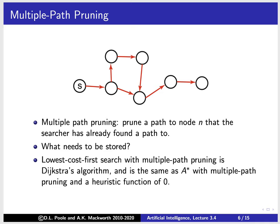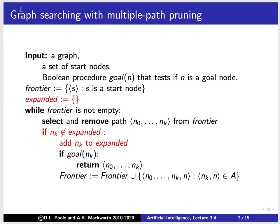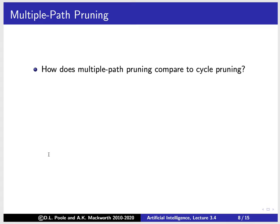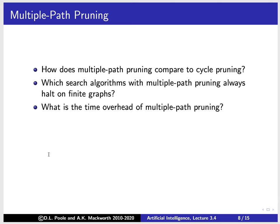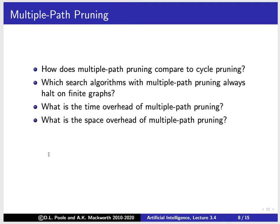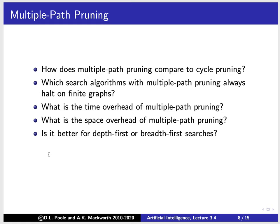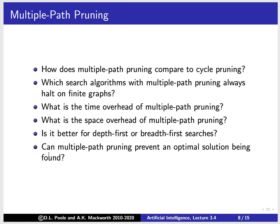To implement multiple path pruning, we maintain a set of all expanded nodes. In the generic search algorithm, if nk is not an element of that set we add it and proceed; if it is an element we just loop again. Questions for class: How does multiple path pruning compare to cycle pruning — is one more useful, should we do both? Which search algorithms with multiple path pruning always halt on finite graphs? What is the time and space overhead of multiple path pruning? Is it better for depth-first or breadth-first search? Can multiple path pruning prevent an optimal solution from being found?